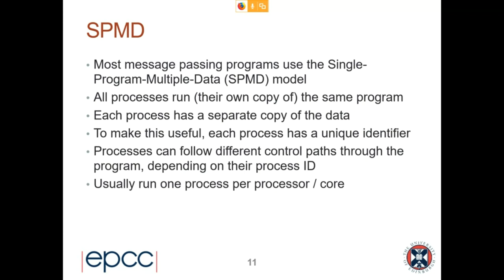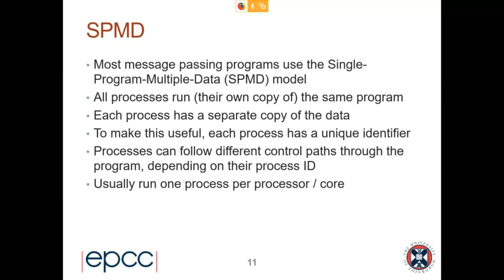You might wonder: if they're all running the same program, how do they do anything useful? The answer is that you can branch the program based on a unique identifier for each process — for example, saying 'if you are process zero, do this; otherwise do something else entirely.' This is how we get processes to run different things while running the same code fundamentally. It simplifies things too — you don't have to compile a hundred different binaries. Typically we run one process per processor or core, though you can run more for testing purposes.